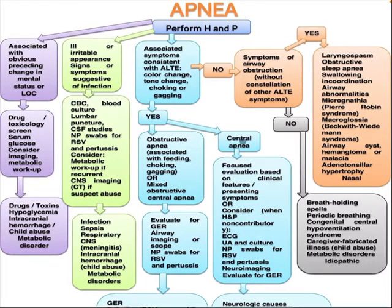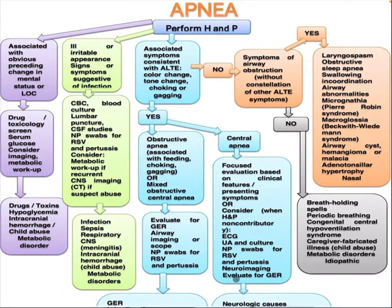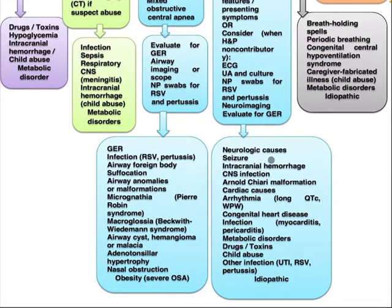If the patient has an acute life-threatening event with signs and symptoms of either obstructive or central apnea, perform a focused evaluation based on clinical features. Consider ECG, urinalysis and culture, nasopharyngeal swab for RSV and pertussis, neuroimaging, and evaluation for GERD. Differential diagnosis includes neurological causes such as seizure, intracranial hemorrhage, CNS infection, Arnold-Chiari malformation; cardiac causes such as arrhythmia, long QT syndrome, Wolff-Parkinson-White syndrome, congenital heart disease, myocarditis, pericarditis; metabolic causes, drug or toxin, child abuse, other infections such as UTI, RSV, pertussis, and idiopathic.